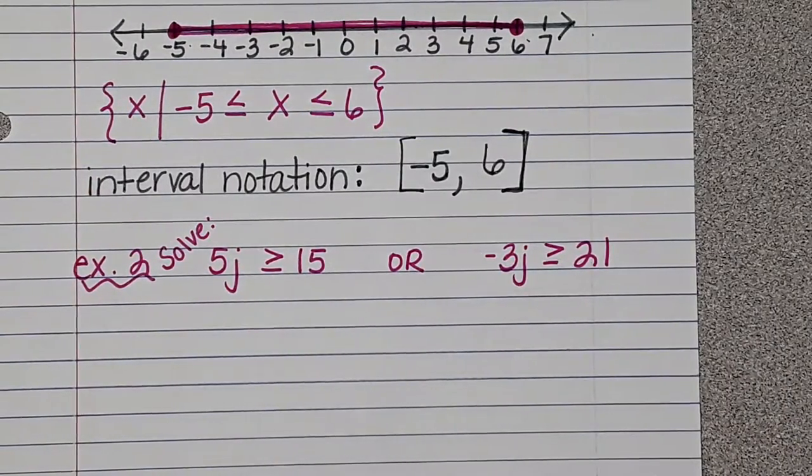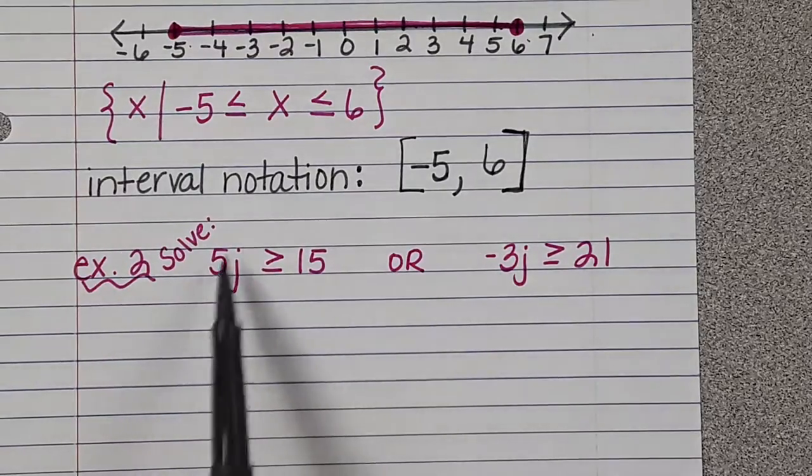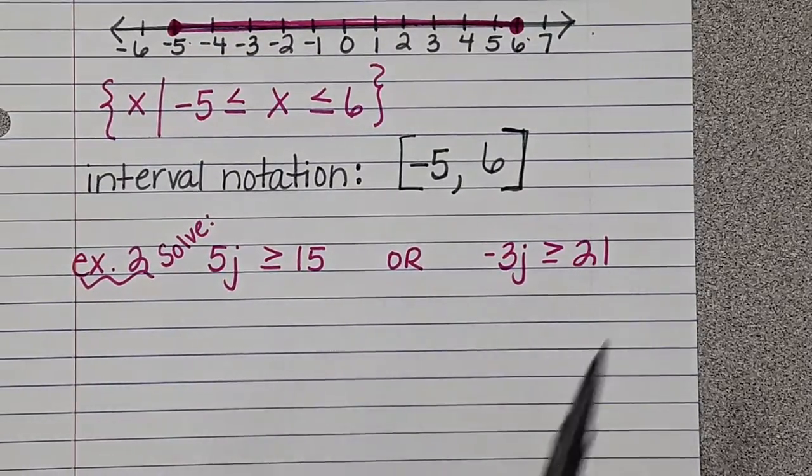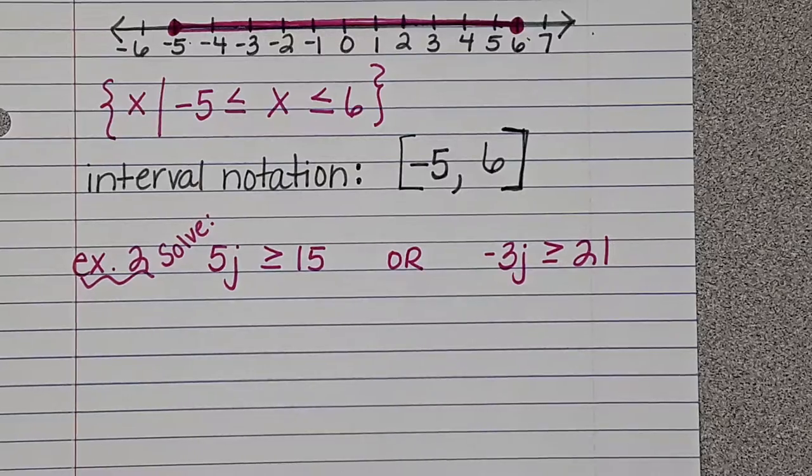Most of the time when you go to graph an or, the number line is going to graph in different directions, which means that just one of them at the same time needs to be true. So what I mean by that is this one can be true or this one can be true, but they probably will not be true at the same time.